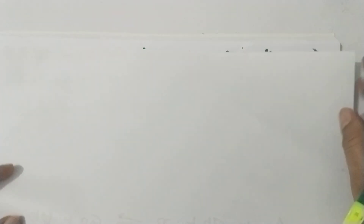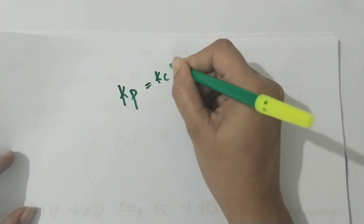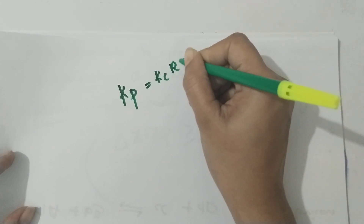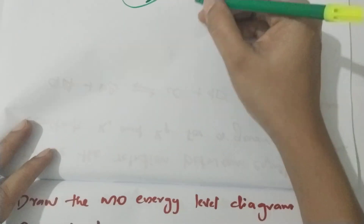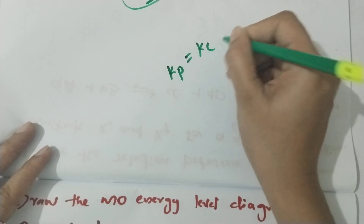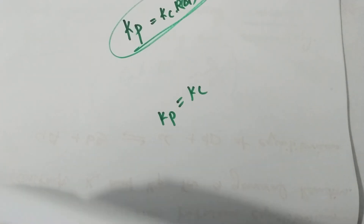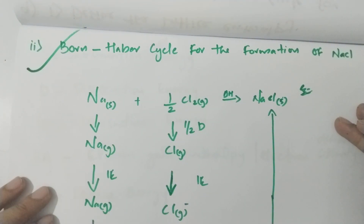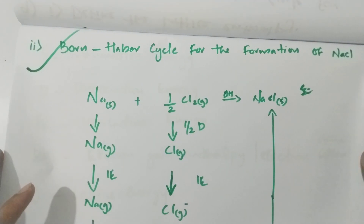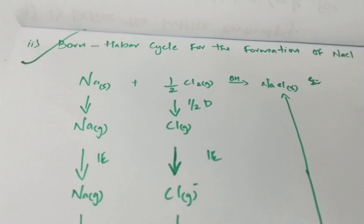The relation between Kp and Kc is: Kp equals Kc multiplied by RT raised to the power delta n. The Born-Haber cycle is also important — draw the Born-Haber cycle for the formation of NaCl.